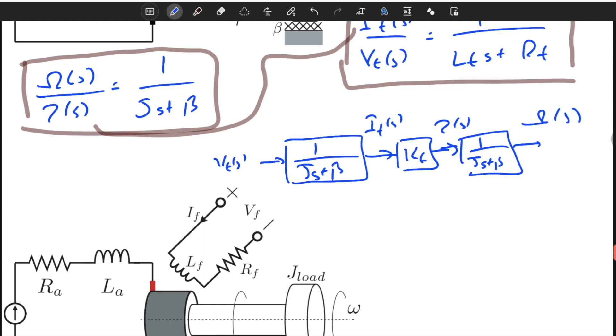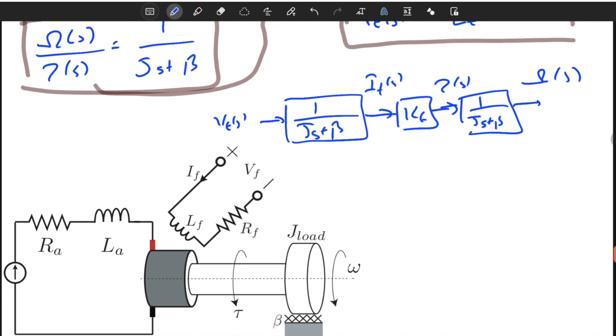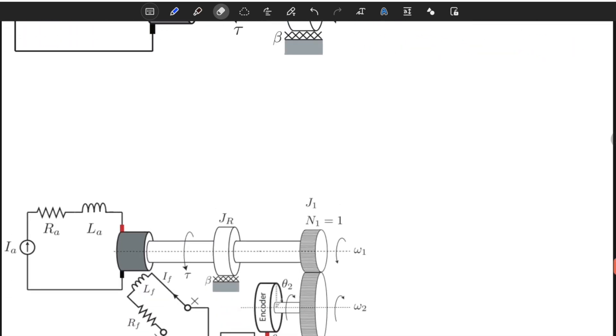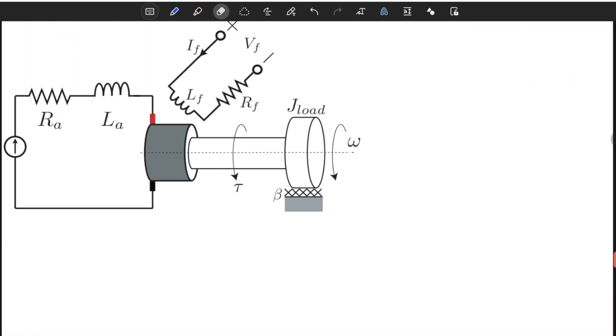If we compute the transfer function, we will find that G(s) is equal to k_f divided by J times L_f s squared plus... Let's write it in a cleaner part. This was an example.